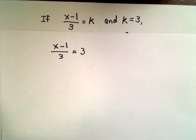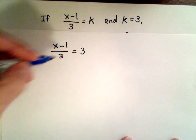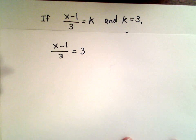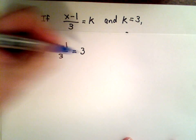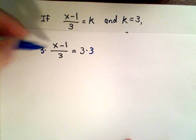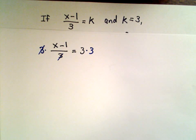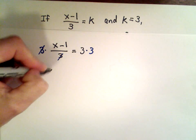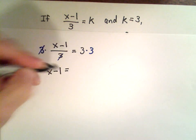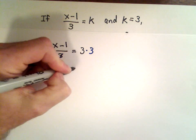And now it's just a matter of solving for x. We've got (x - 1) divided by 3. We can simply multiply both sides by 3. On the left side the 3's will cancel out and we'll be left with x - 1. On the right side, 3 multiplied by 3 is going to give us 9.